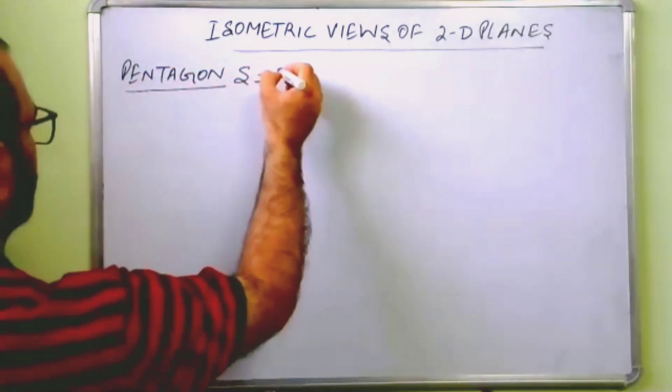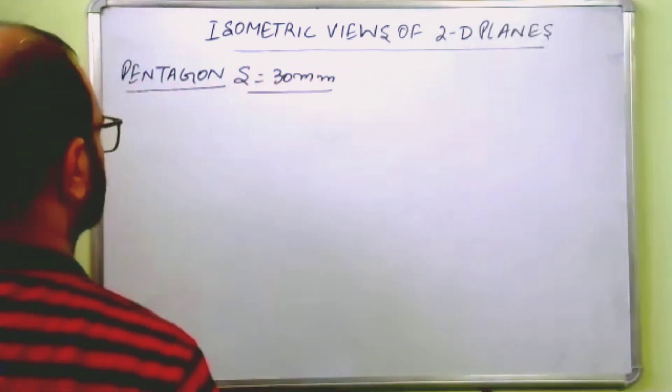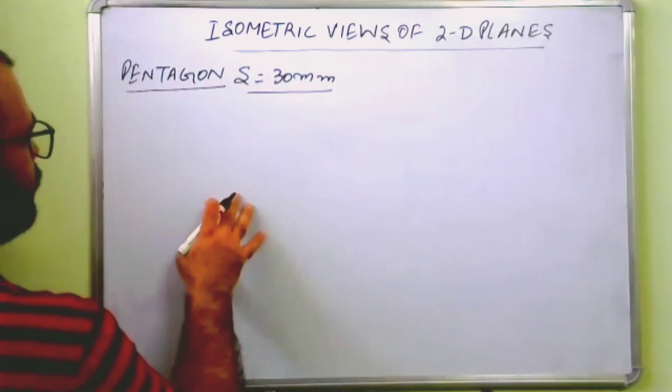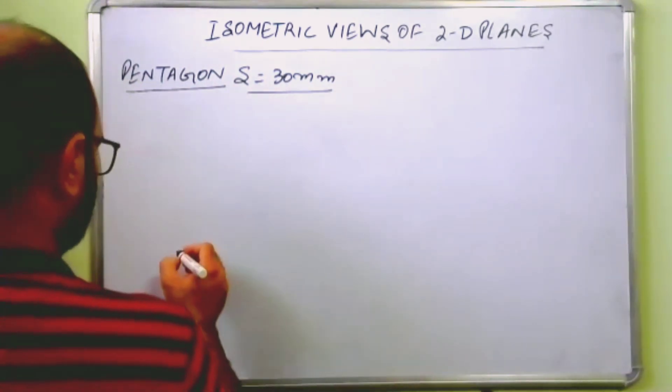Let one side of the pentagon equal 30mm. First of all, you will draw the actual view of the pentagon.